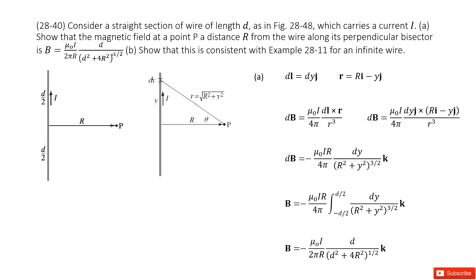We need to consider a straight section of wire of length d. The top half is d over 2, the bottom half is d over 2. We need to determine its magnetic field at point P, a distance R from the wire.